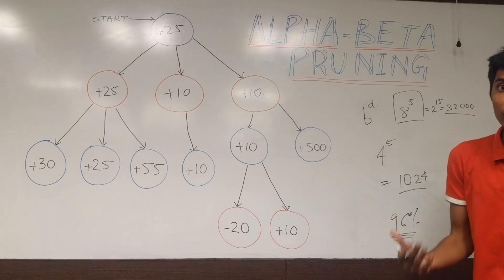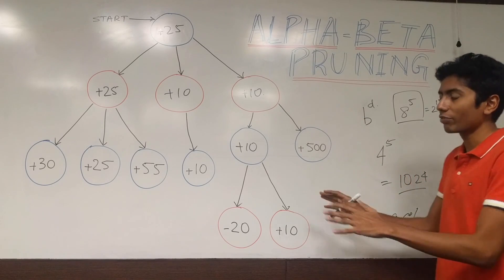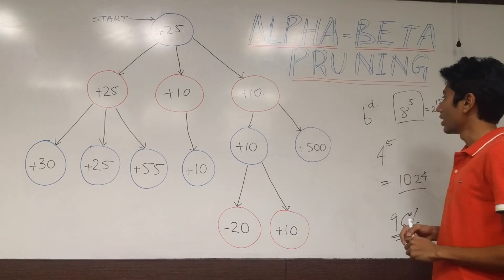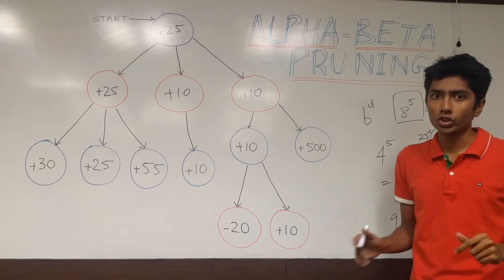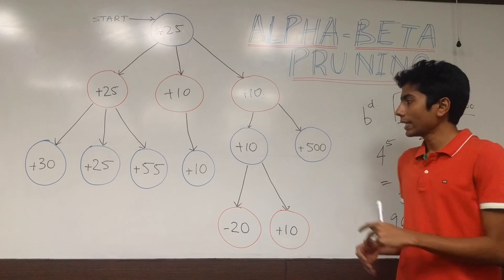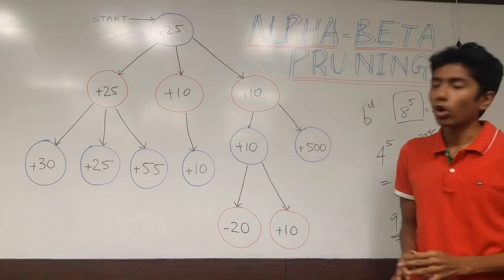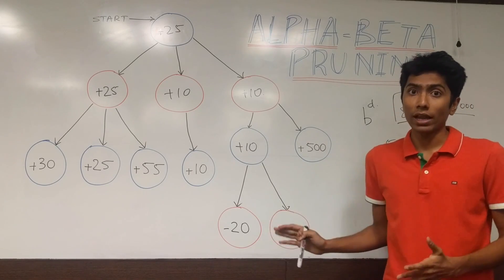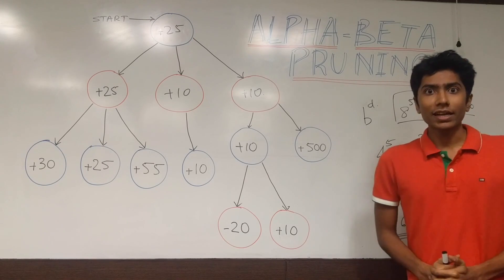Now, 50% reduction in branching factor is a huge saving and through alpha-beta you probably won't get that — that's only with a perfect heuristic. But reasonable savings are around 25% of the branching factor, and that itself is huge. The top programs in AI contests using the minimax approach always use alpha-beta or some variation of it, so this is a very important algorithm to know about.